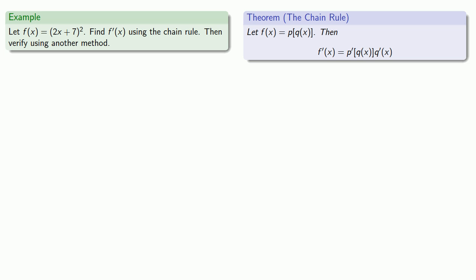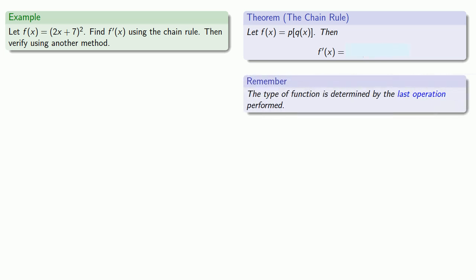And so this leads to the following approach to evaluating the derivative of a composite function. First, remember that the type of function is always determined by the last operation performed. And so for the first part of the chain rule, we can ignore or drop out that inside function completely, then find the derivative of what we see, and then apply the kindergarten rule, which is put things back where you found them. We took the q(x) out, we should put it back in, and also multiply by the derivative of the thing that we just wrote.